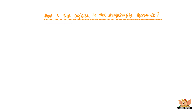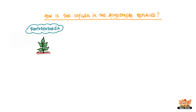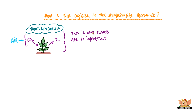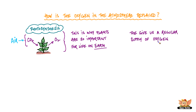How is the oxygen in the atmosphere replaced? In our previous videos we have talked about photosynthesis, in which plants use carbon dioxide from air to produce their own food. They give out oxygen in the process. This is why plants are so important for life on earth to sustain — they give us a regular supply of oxygen.